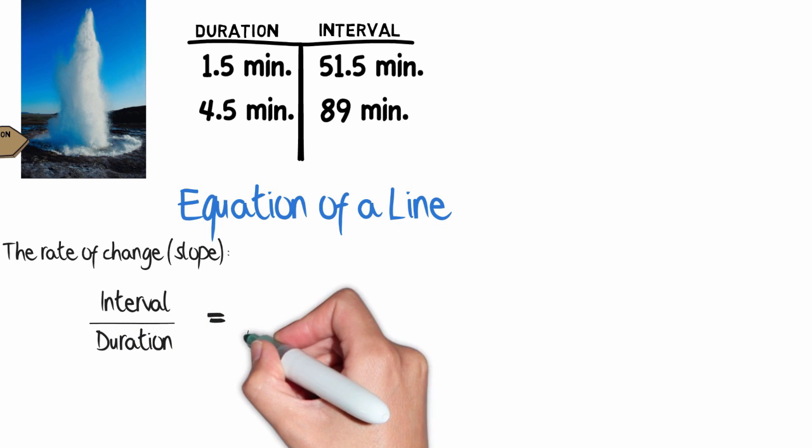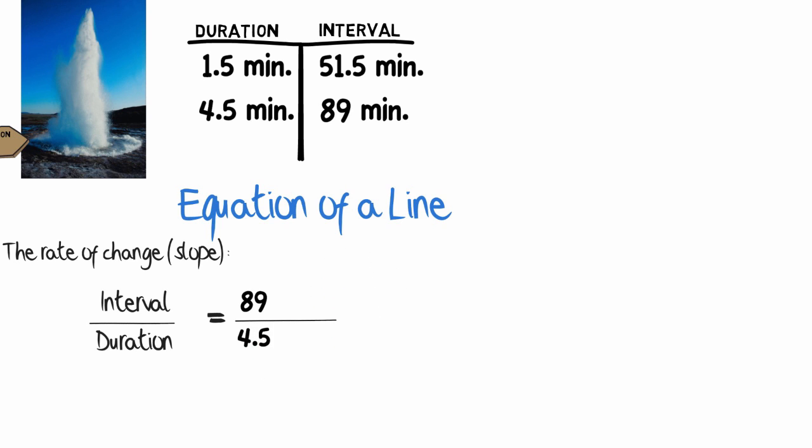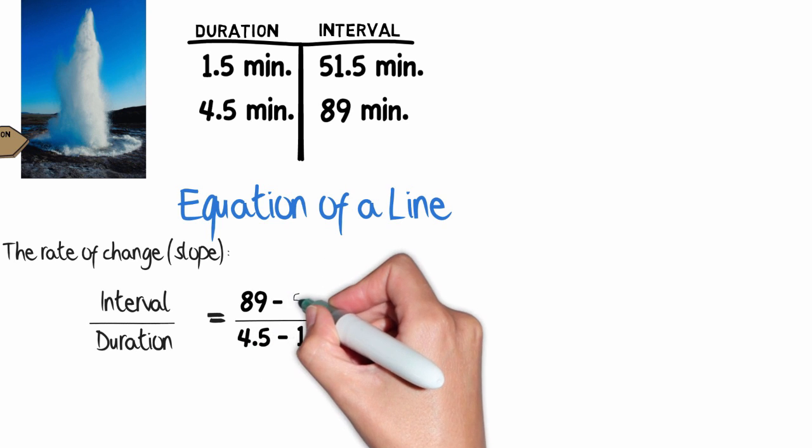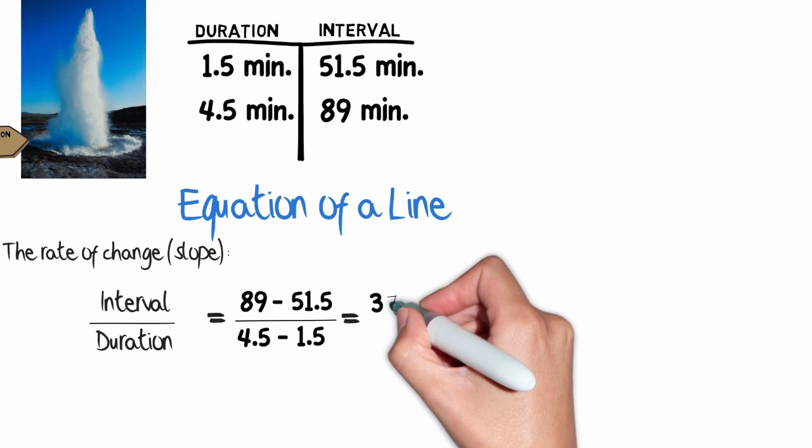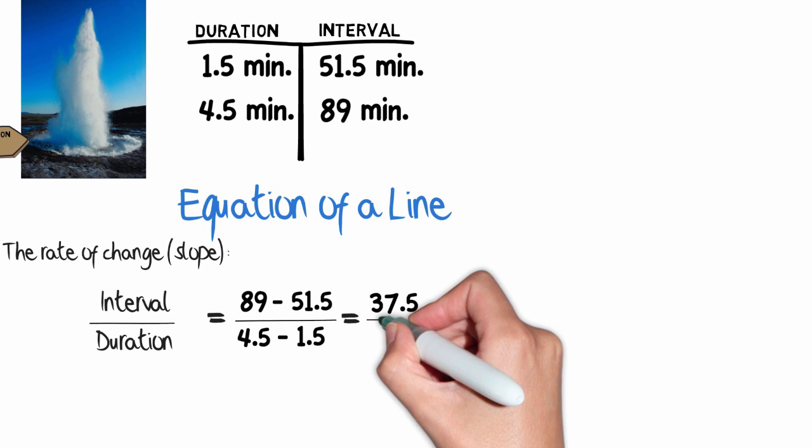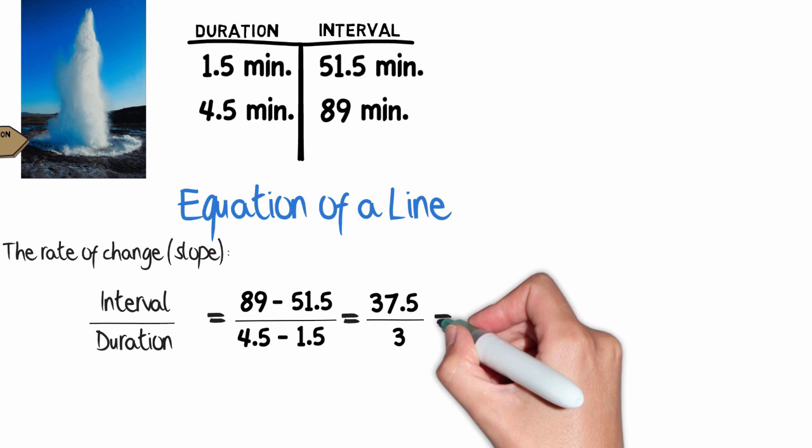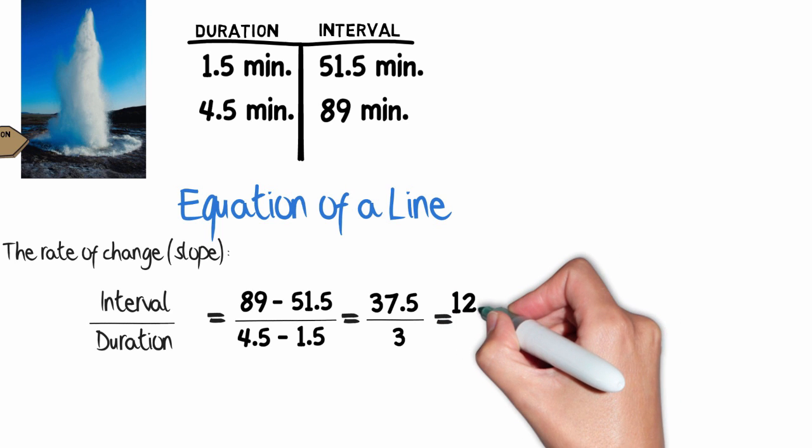The first eruption lasted four and a half minutes, and its interval was 89 minutes. The other eruption lasted one and a half minutes, and its interval was 51 and a half minutes. Subtracting the interval, I get 37 and a half minutes. When I subtract the durations, I get three minutes. When I divide that, I get 12 and a half minutes.